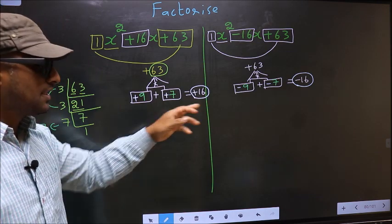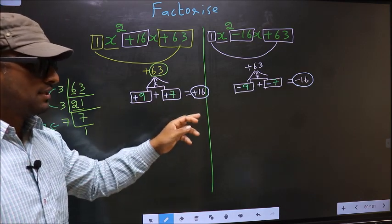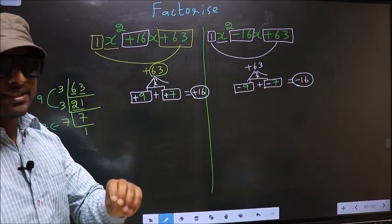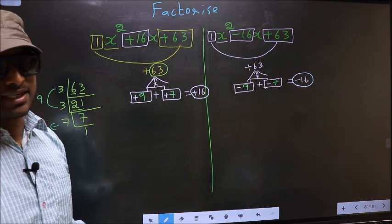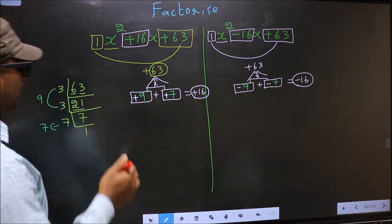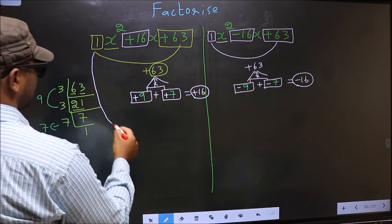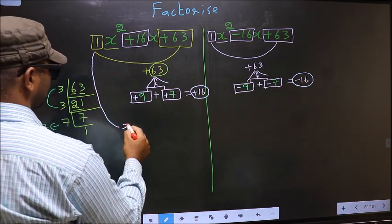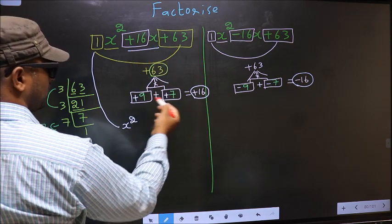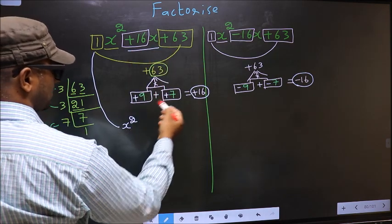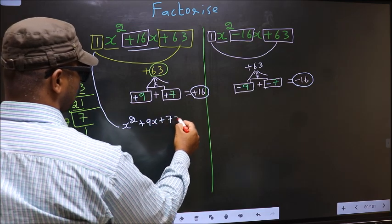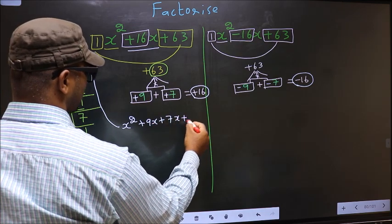So we have adjusted the signs. The difference between the two is only while adjusting the signs; the rest is the same. Now you change this to x squared. In place of plus 16x, we should write plus 9x plus 7x plus 63.